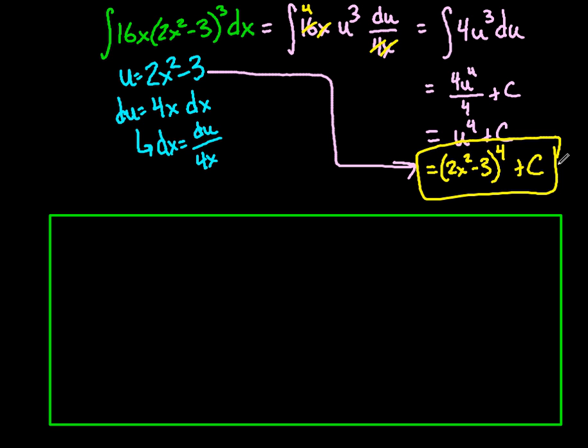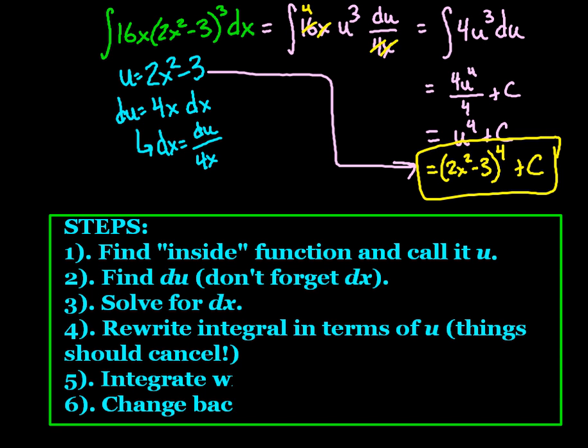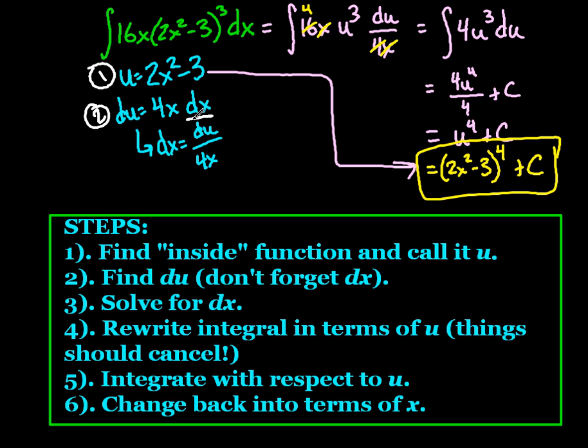So, those are the steps to take. And we have them written down right here. I'll kind of show what the steps are in the process. What you should be looking for first, try to mark them here in white. Find the inside function and call it u. So, that's what we did right here. We then find du, just by taking a derivative. And don't forget this dx part. It is very important.